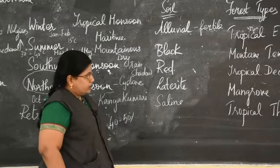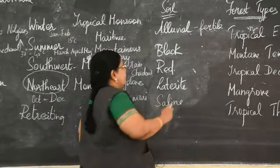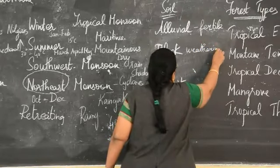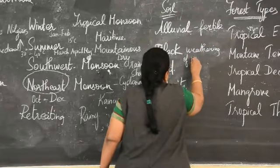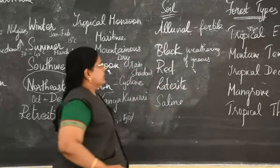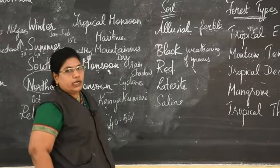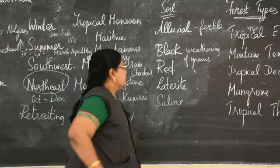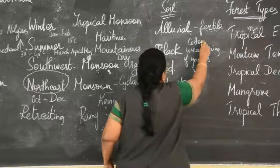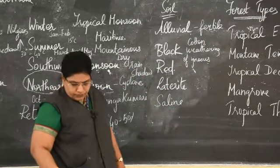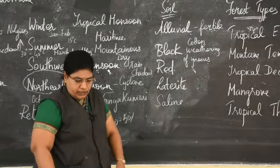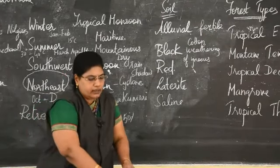Black soil is formed by the weathering of igneous rocks and is also a fertile soil. Since its colour is black, it is called black soil. It is best suited for the growth of cotton, so it is sometimes also called cotton soil. Black soil is found in Coimbatore, Madurai, Virudhunagar, Tirunelveli, and Thoothukudi.